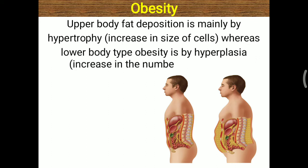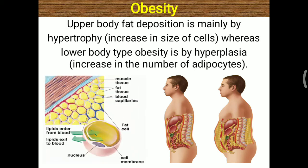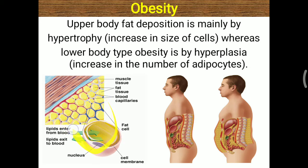In lower body type obesity, hyperplasia occurs — an increased total number of adipocyte cells. These fat cells in adipose tissue deposit excess fat; the cell eventually dies and only fat remains, which is never utilized in the body, leading to permanent obesity.